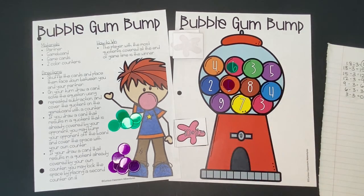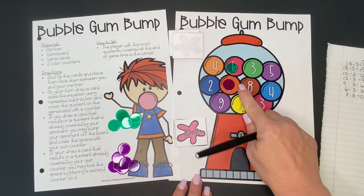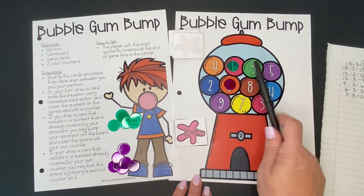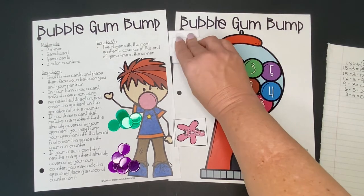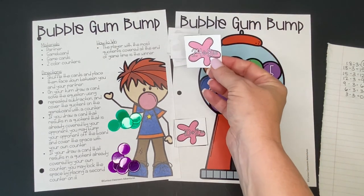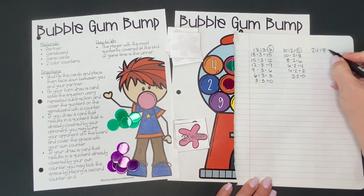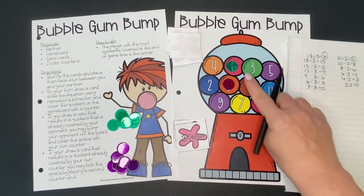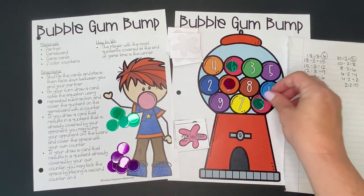Now the next time we go, if we get a division problem that gives us an answer we already have covered on the board — so if I draw again and I get a 6, I could cover this 6 again and lock it forever. Or if I got a problem where my quotient was 5, I could bump my player off and put my own counter there. You can only lock it once you have two counters on there. So let's see what we come up with — 24 divided by 8. Let's come over to our scrap paper. 24 minus 8 equals 16. 16 minus 8 equals 8. 8 minus 8 equals 0. So I could subtract 3 times — 24 divided by 8 is 3. I can't lock or bump, but I can cover a new bubblegum piece. I have choices for 3 here or here. I'm going to go with down here.